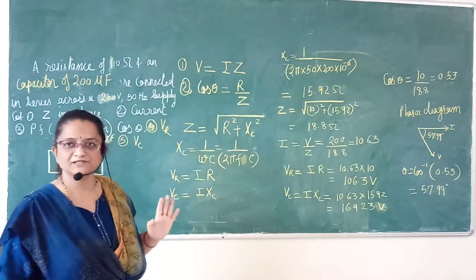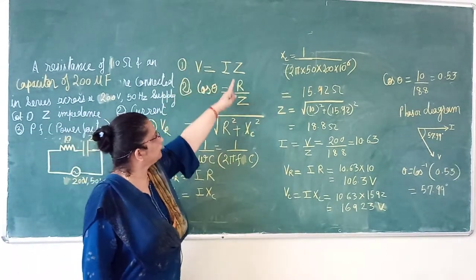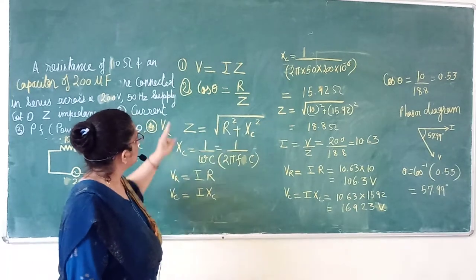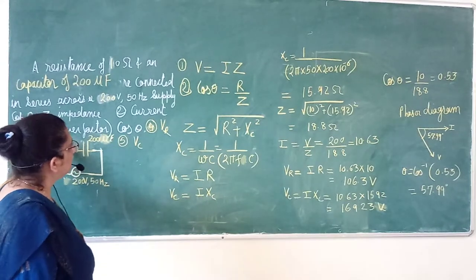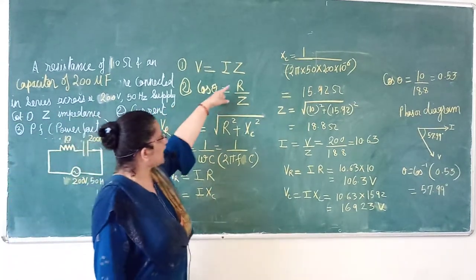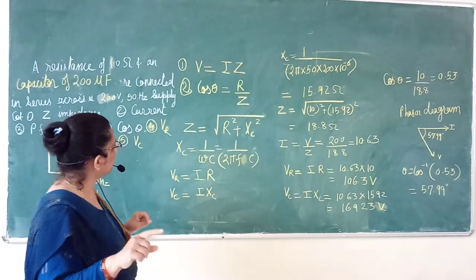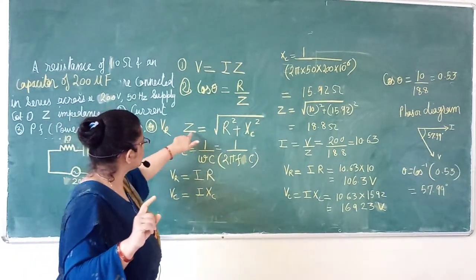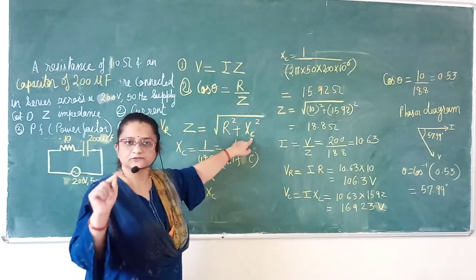You want to know the formula. The formula is first, V is equal to I into Z. Second formula is cos theta, cos theta means power factor. Power factor is R upon Z. If you want to find out Z, Z is equal to under root R square plus Xc square.